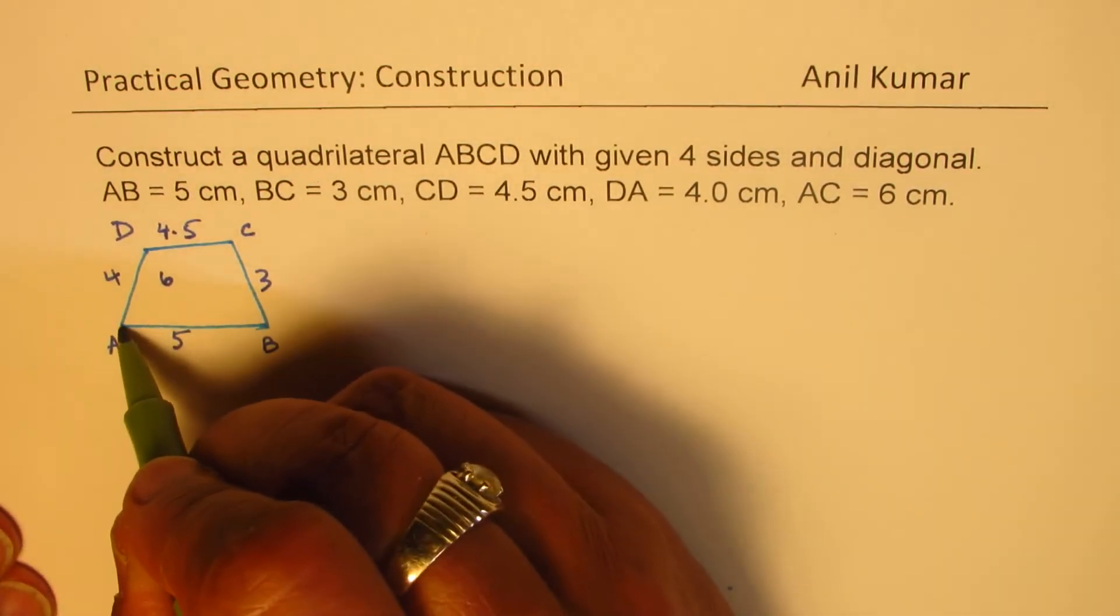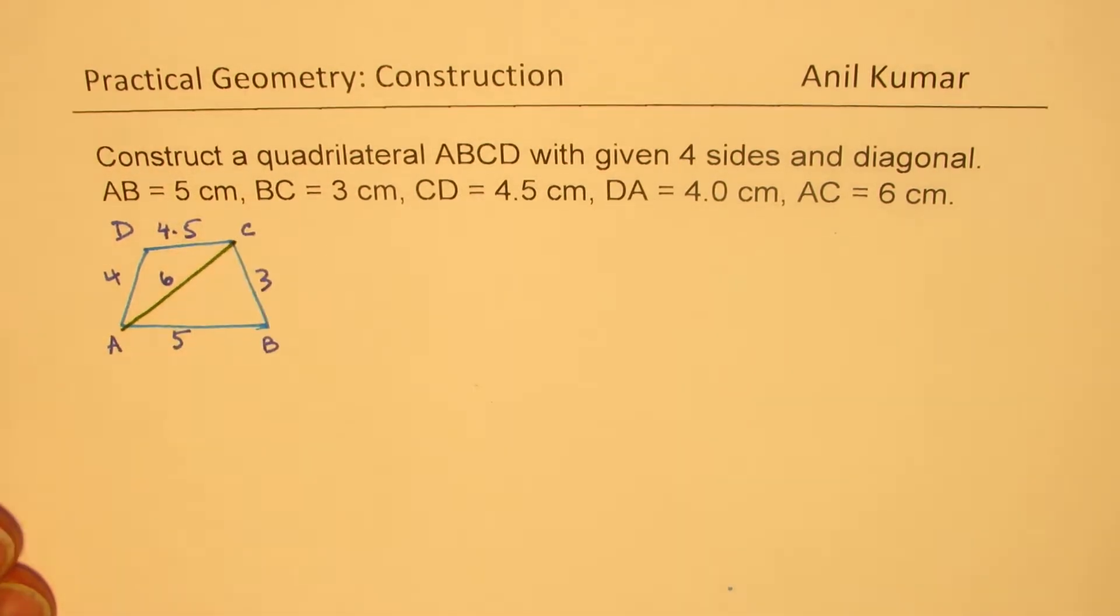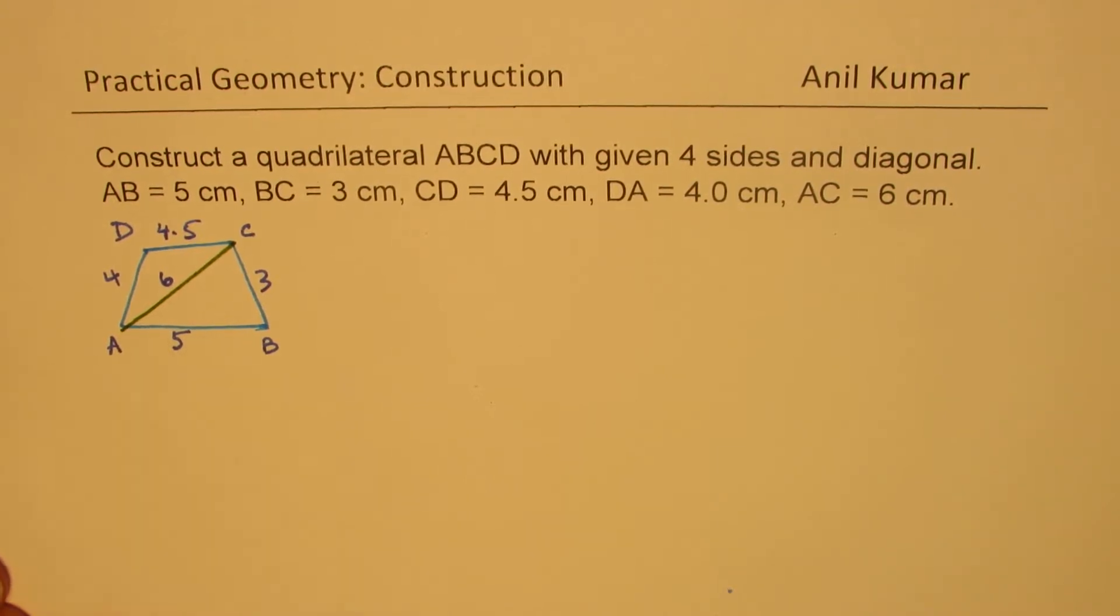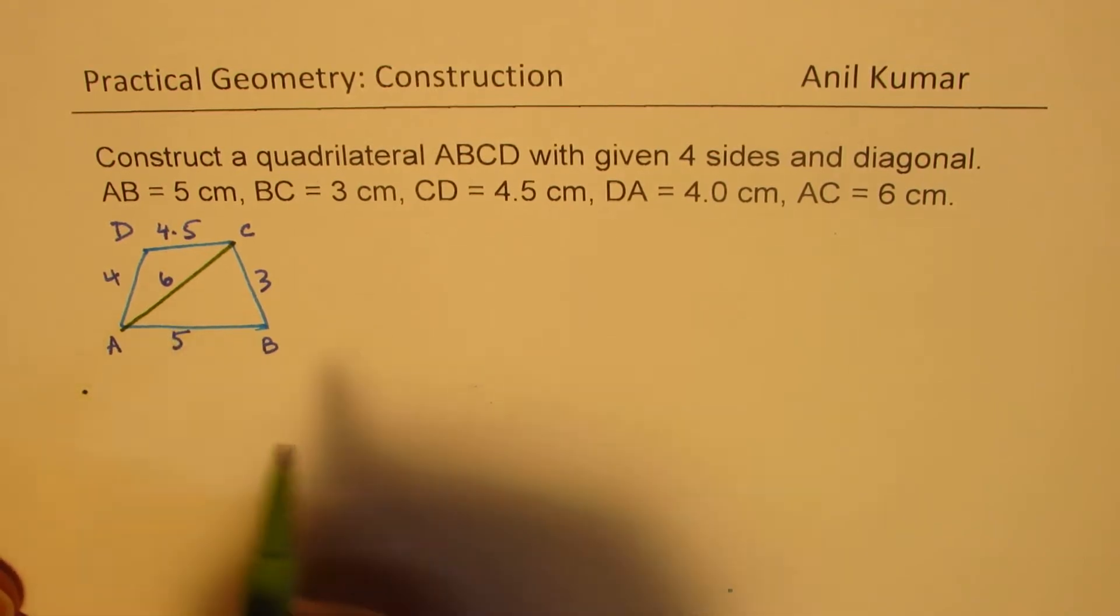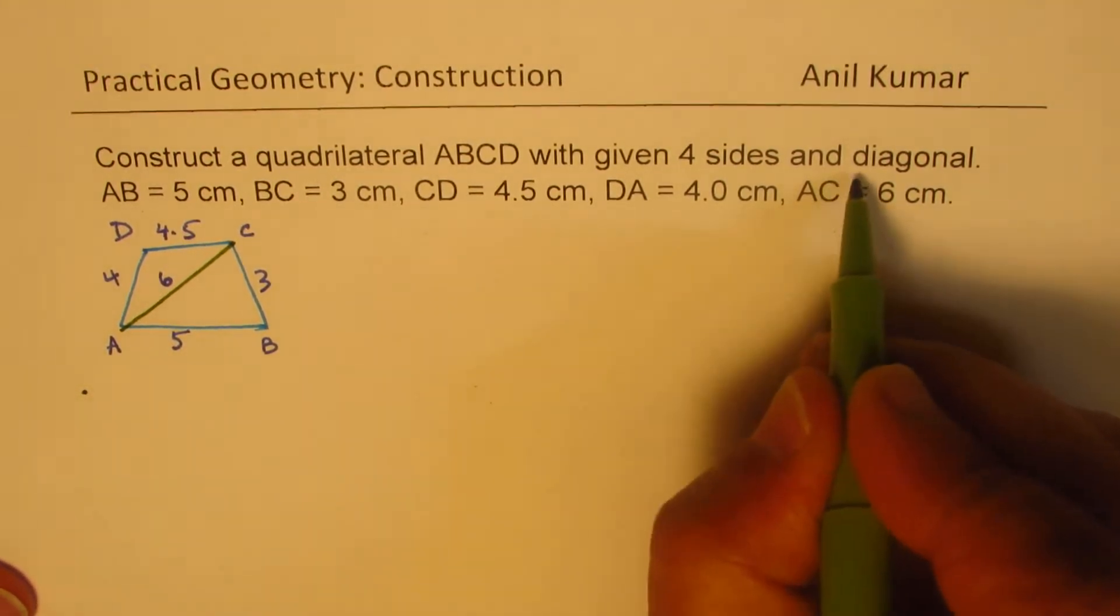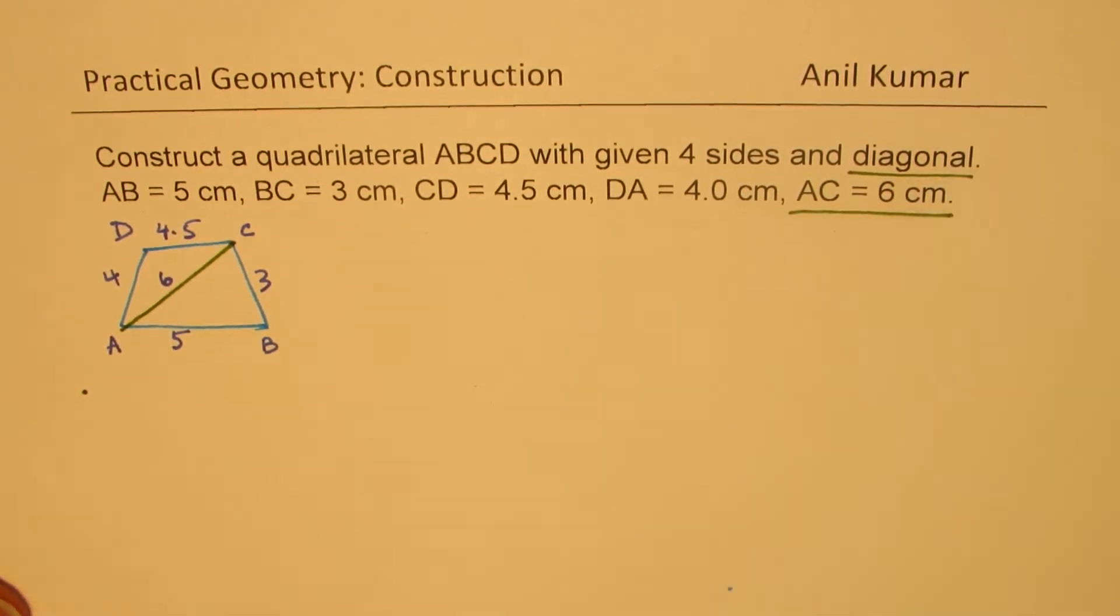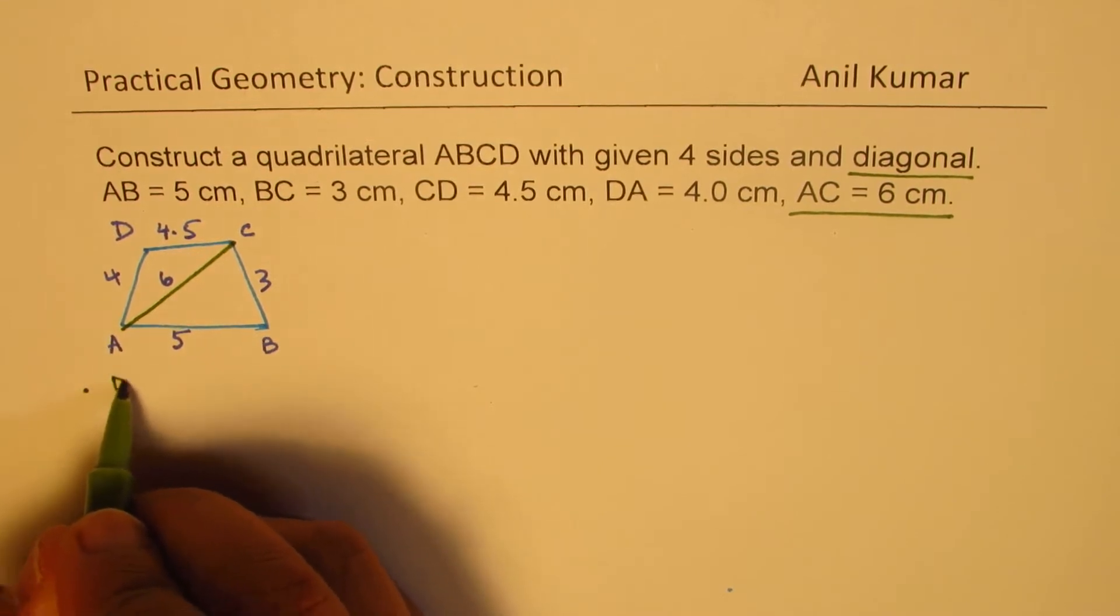This is what we need to construct. Now how do we do that? To begin with, the most important step here is to begin with diagonal. So we'll actually first take the diagonal and then figure out the sides. If you follow this step it is not so difficult. First step is we'll construct the diagonal.